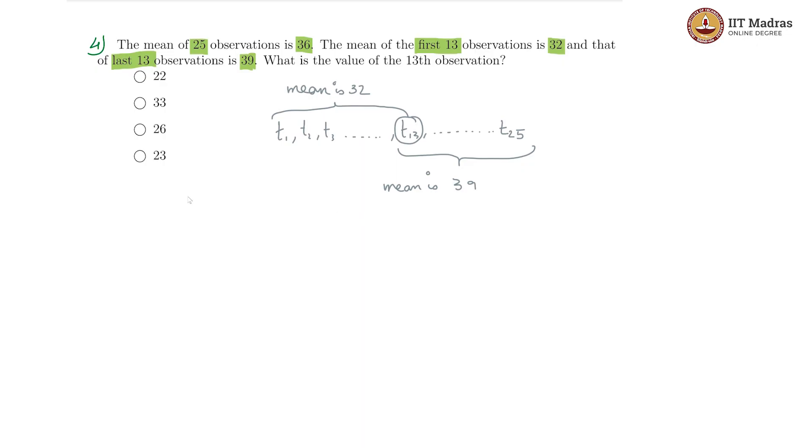What we get from these three different pieces of information is when we talk about all 25 put together the mean is 36, so that means the total sum sigma t i, where i goes from 1 to 25 divided by 25 is 36.